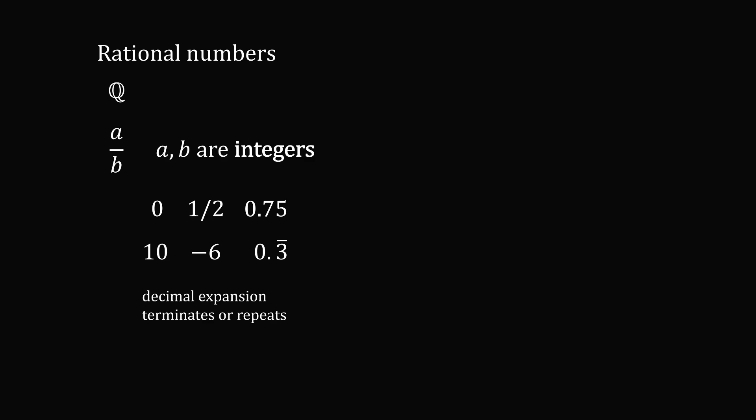To get started, let me briefly review rational numbers. They're often denoted by the blackboard Q symbol. A rational number is defined as a number that can be expressed as A over B, where A and B are integers. Rational numbers include numbers like 0, 1/2, 0.75, 10, negative 6, or 0.3 recurring. Basically, a rational number is one whose decimal expansion either terminates after some number of terms, or it has a repeating pattern.